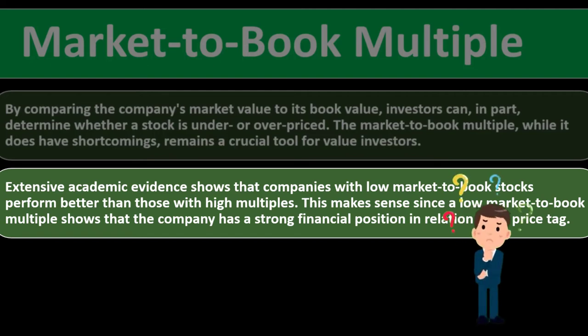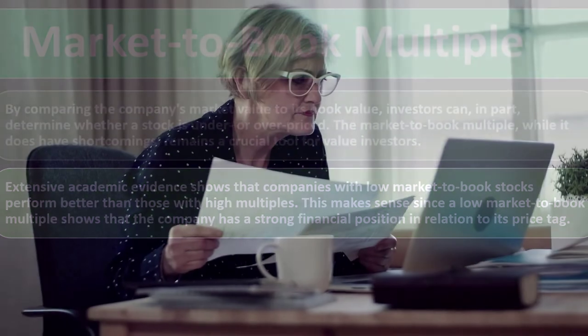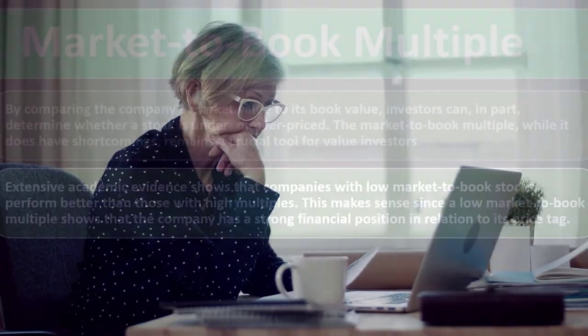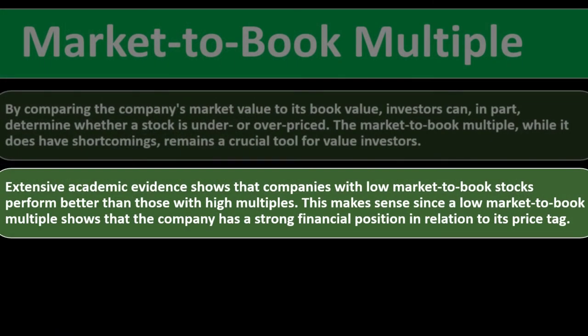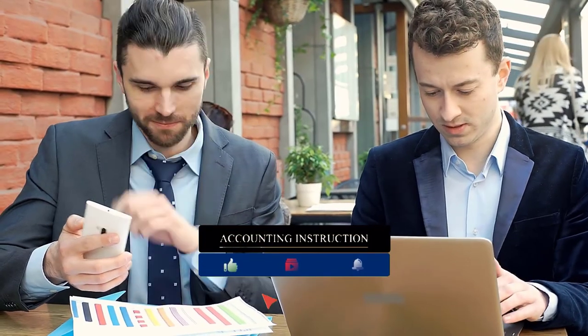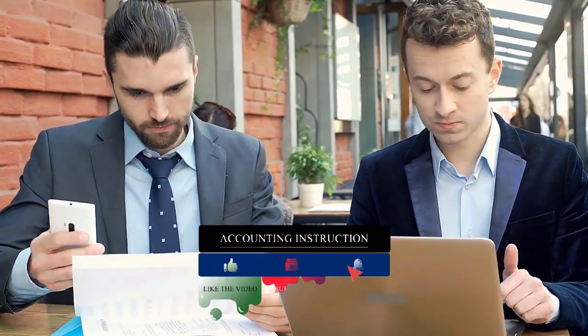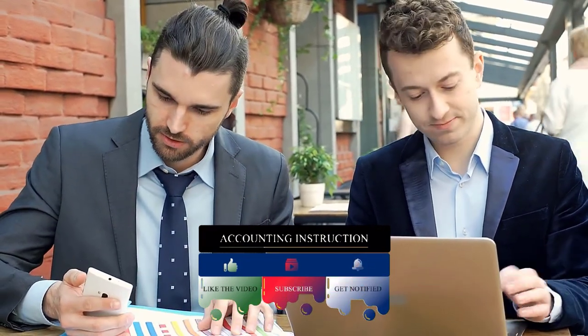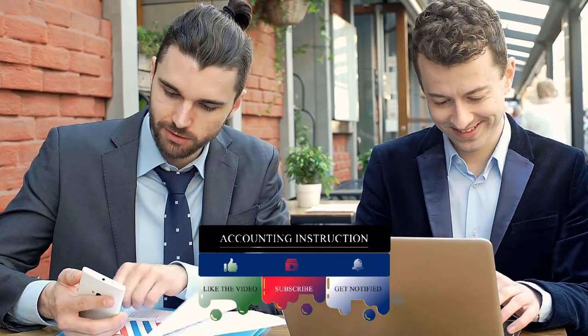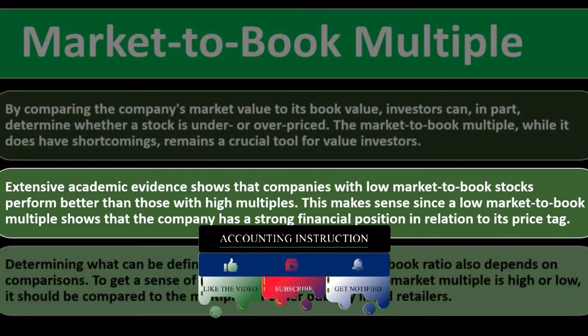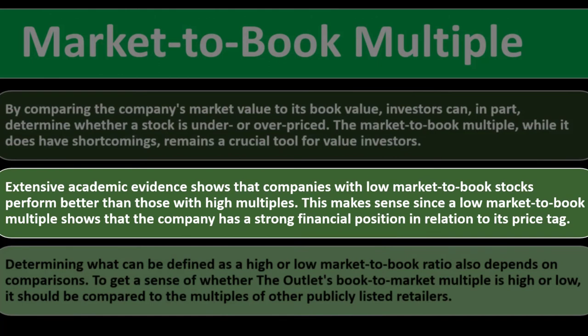If a company's price is many multiples of its book value versus another company trading closer to book value, the second one would be considered more appropriately valued or possibly a better investment, as the underlying conditions are closer to the market price. This can get skewed in speculative sectors focused on growth, but it can be a good tool to ground investment decisions in individual stocks.